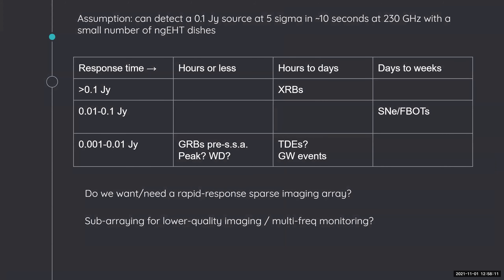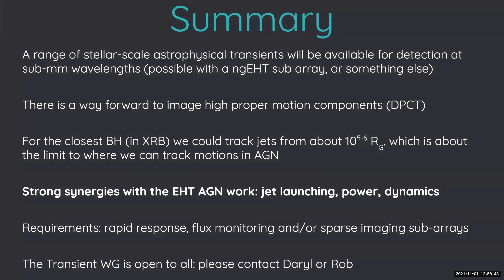We've been trying to put together use cases and engineering constraints for NGEHT, building tables where we put classes of objects, how bright they might get, and what kind of response times the array might need. Things we're thinking about: do we need a rapid response mode for NGEHT, both in terms of flux monitoring and imaging? And can we do this with sub-arrays of the telescopes? There's a whole range of stellar scale astrophysical transients. A lot of these objects will be detectable as relatively bright submillimeter sources, and this could possibly be done with an NGEHT sub-array.